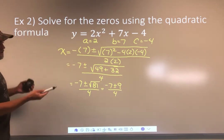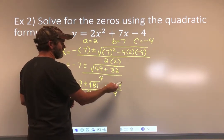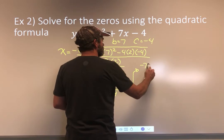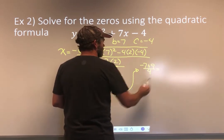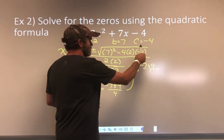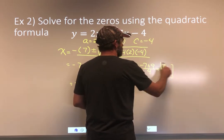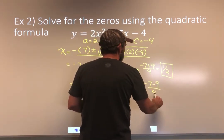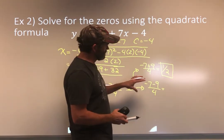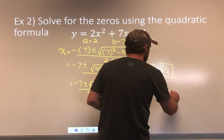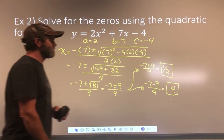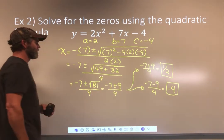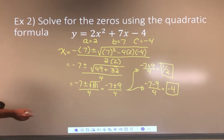And, of course, we can't leave the answer like that because there's some math to do. I have negative 7 plus 9 divided by 4, and negative 7 minus 9 divided by 4. So let's do those right here. Let's do the plus first. What's that going to give us? Well, negative 7 plus 9 is 2, and 2 over 4 is 1 half. There's the first zero. Now let's do the minus. Negative 7 minus 9 over 4. And what's that? Negative 7 minus 9 is negative 16. Negative 16 divided by 4 is negative 4. And there's the second zero.